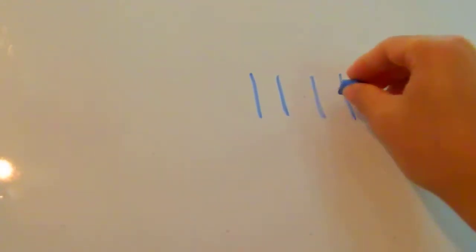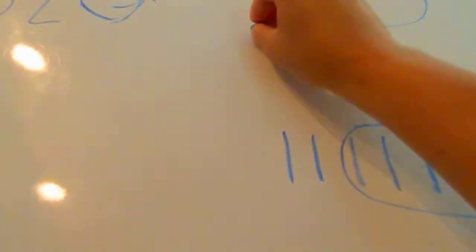1, 2, 3, 4, 5, 6, 7, 8, 9. Minus. How many? 7. 7. 1, 2, 3, 4, 5, 6, 7. 7. Take away the 7. The answer is 2.